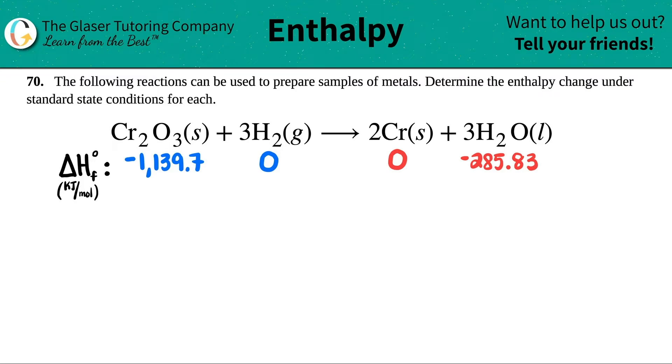Number 7D. The following reactions can be used to prepare samples of metals. Determine the enthalpy change under standard state conditions for each. We have this reaction right here. We need to find the enthalpy change for the reaction of Cr2O3 plus 3H2, which will yield 2Cr plus 3H2O liquid.